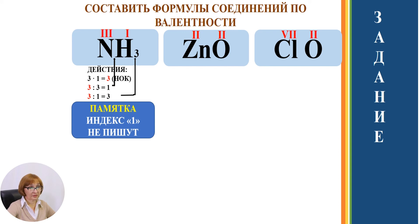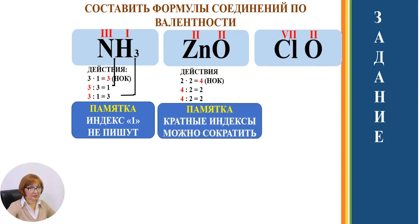Следующая формула: цинк O, валентность кислорода 2, валентность цинка 2. Валентности перемножаем, получаем 4 — наименьшее общее кратное. Делим 4 на валентность каждого элемента, получаем индексы 2 и 2. Но кратные индексы можно сократить, и таким образом в формулу ZnO мы индексы не выставляем.